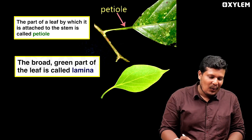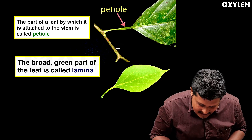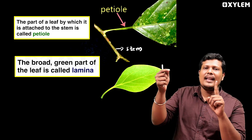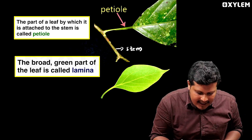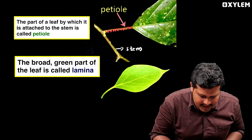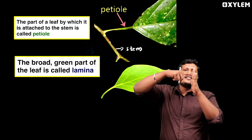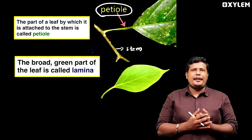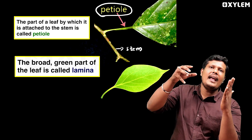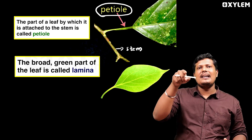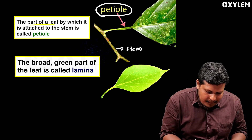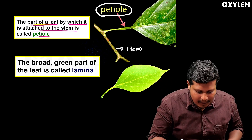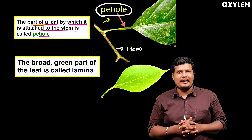We're going to learn a few things. There's a stem. The part of the leaf by which it is attached to the stem — we call it petiole. The leaf is attached to the stem by the petiole. What do we call it? Petiole.